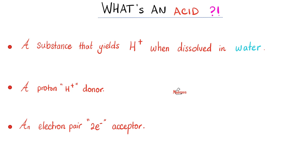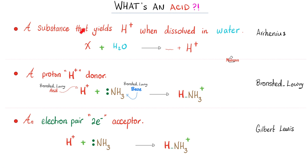Do you remember your chemistry? What's an acid? We have three definitions for an acid. An acid is a substance that yields protons when dissolved in water. A proton donor is an acid. An electron pair acceptor is an acid. The first definition is known as the Arrhenius acid. The second is the Bronsted-Lowry acid. The third is the Lewis acid.